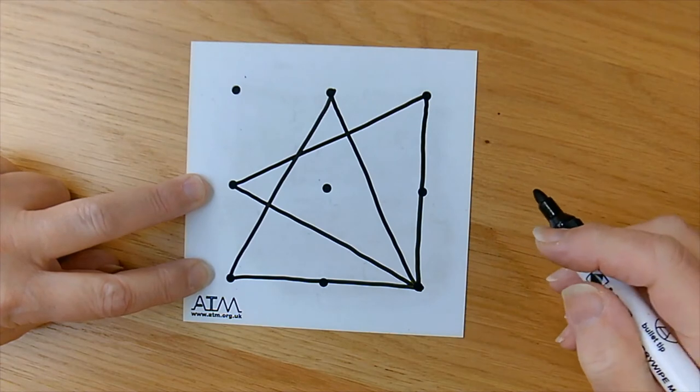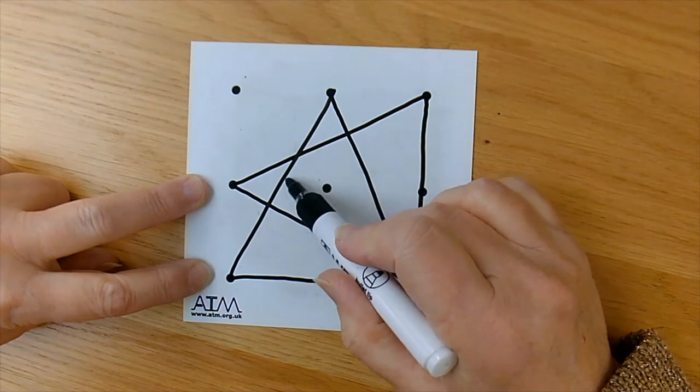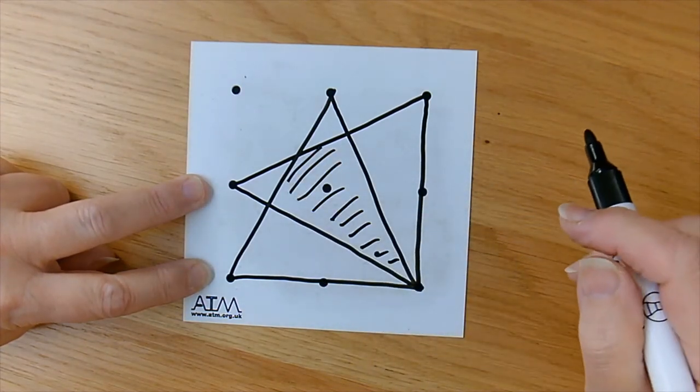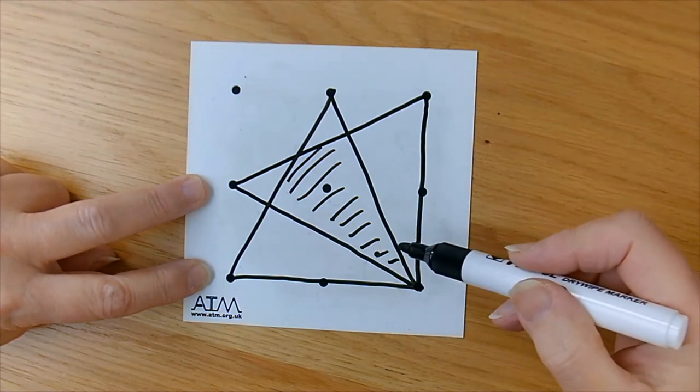There you go. The two triangles overlap and the area in which they overlap is this one here. And the problem is to work out the overlapping area.